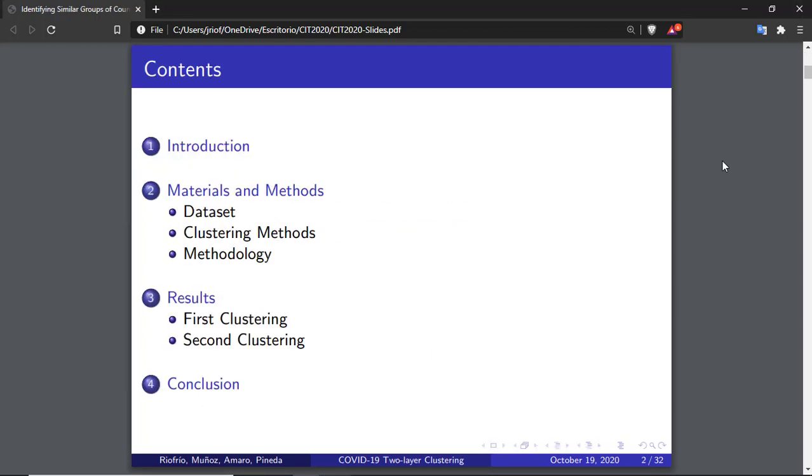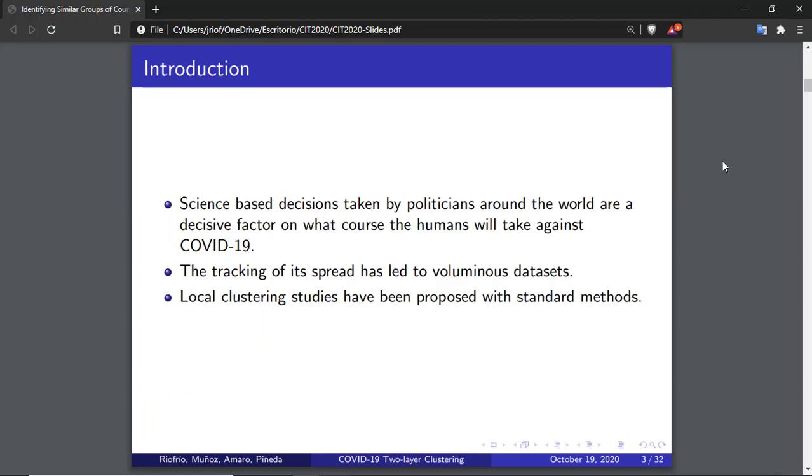This is a table of contents that we will follow during this presentation. On March 11, 2020, the World Health Organization characterized COVID-19 as a pandemic. Since then, unwavering efforts from countries worldwide have been made to control the spreading and develop a vaccine to prevent it. Science-based decisions taken by politicians around the world is a decisive factor in what course the human race will take against such threat. Therefore, to analyze how the virus spreads and its global impact is essential.